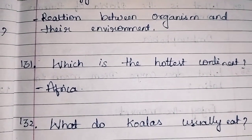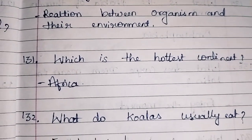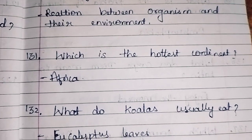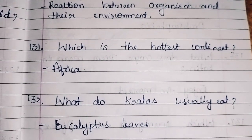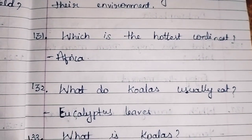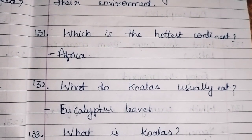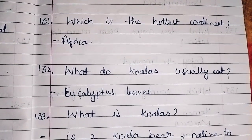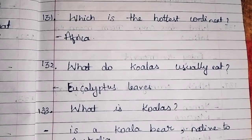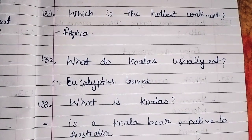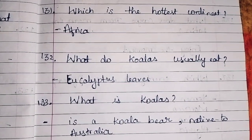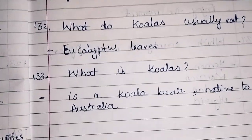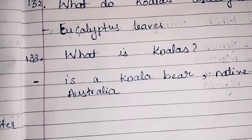What do koalas usually eat? They eat eucalyptus leaves. What is a koala? It is an animal — a koala bear — which is native to Australia.